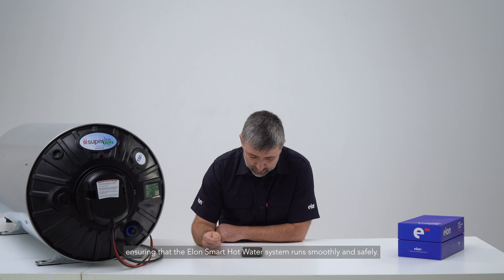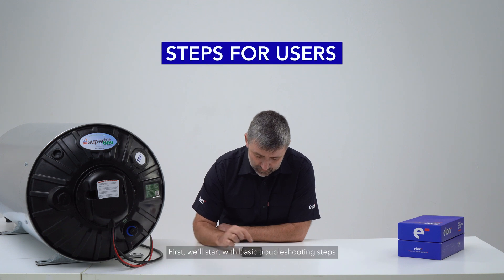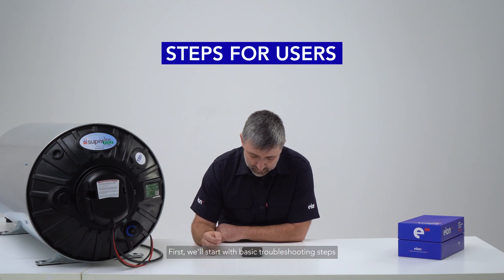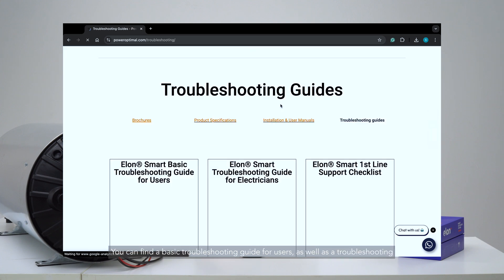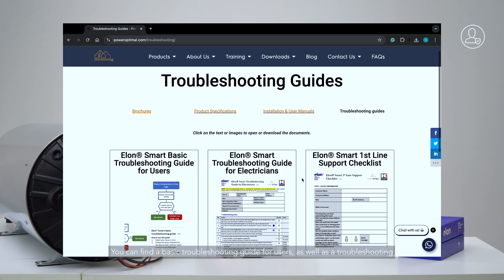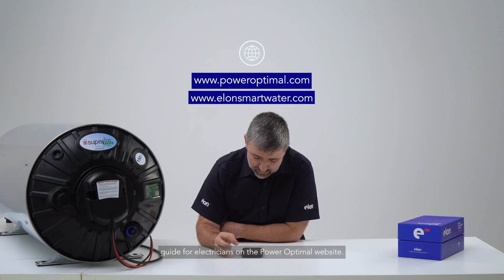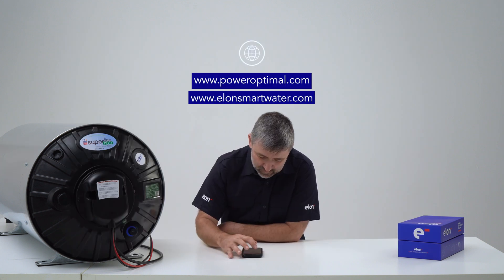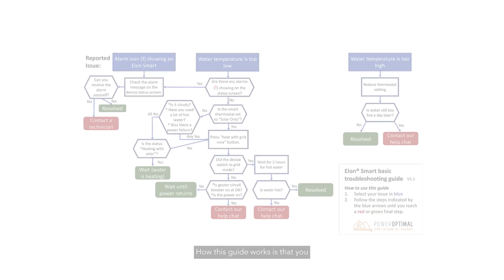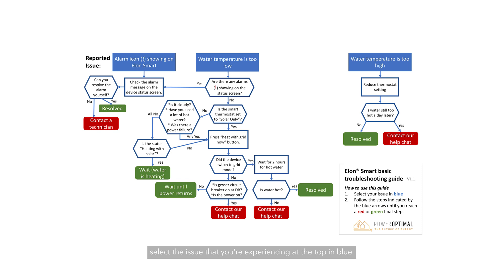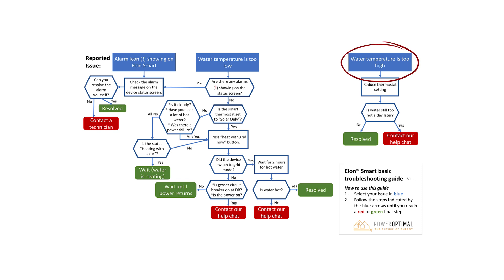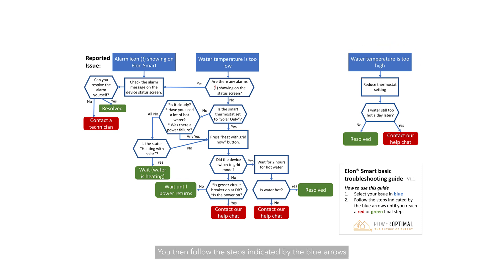First, we'll start with basic troubleshooting steps that users can carry out themselves. You can find a basic troubleshooting guide for users, as well as a troubleshooting guide for electricians, on the Power Optimal website. How this guide works is that you select the issue you're experiencing at the top in blue, then follow the steps indicated by the blue arrows.